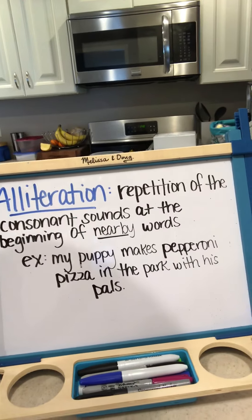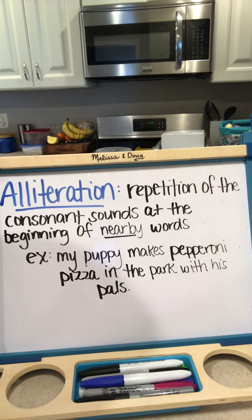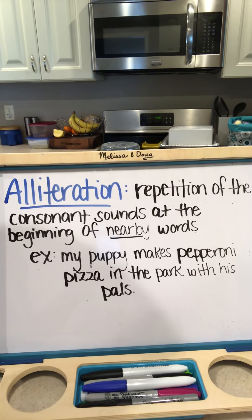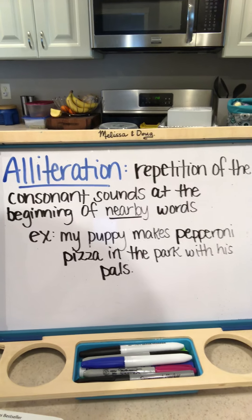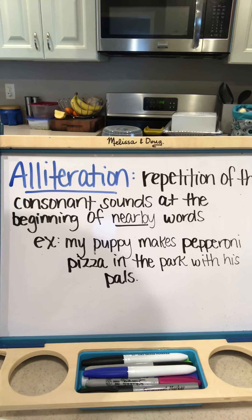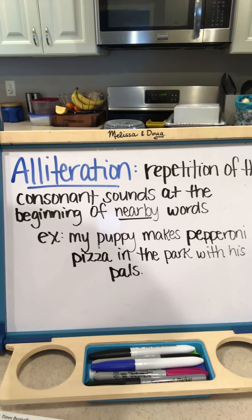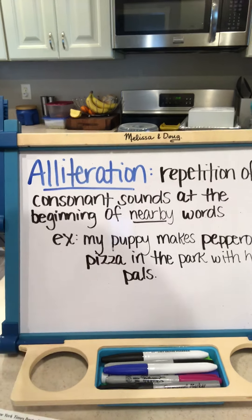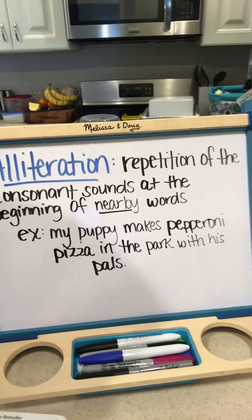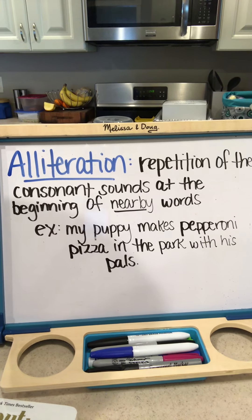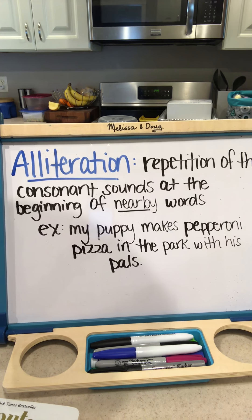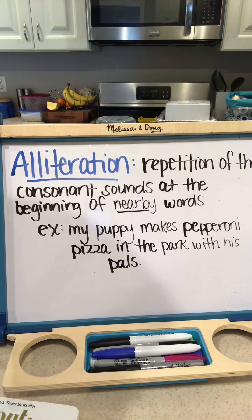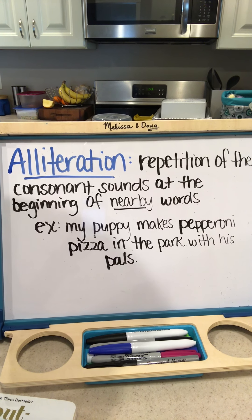Alliteration, if everybody can see this, is the repetition of the consonant sounds at the beginning of nearby words. I'm emphasizing consonant, beginning, and nearby, because in order for your poem or a text to have alliteration, the sound that is repeated must be a consonant, it must be at the beginning of words, and they must be nearby each other in the sentence.